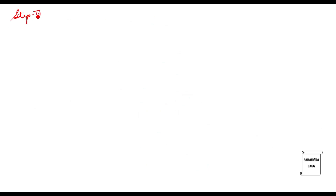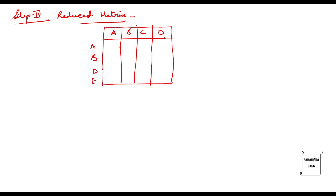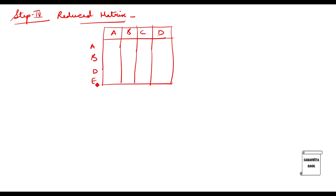Step four is the reduced matrix. What remains are rows A, B, C, D and columns A, B, D, E. Since I allocated C to E, the reverse allocation E to C is not possible, so I write a dash for E to C. Then I copy the rest of the numbers: dash, one, three, zero, one, two, zero, zero, zero, zero, three, dash, zero, zero, and three.